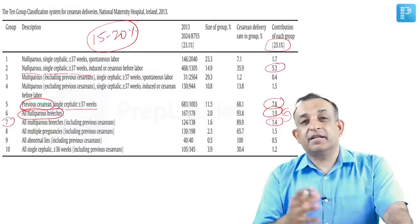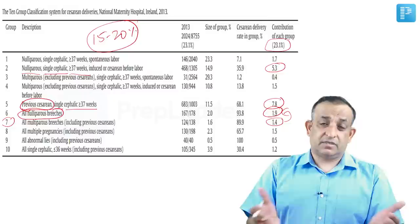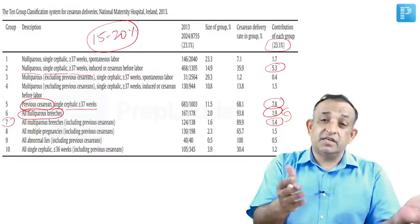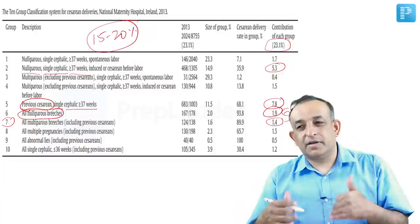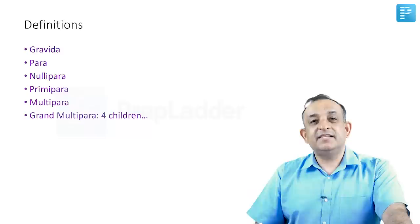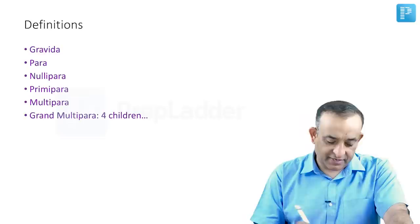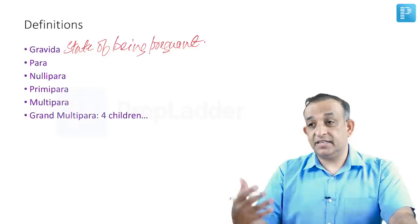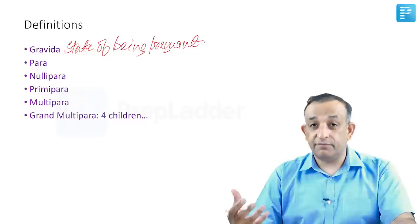More than 30% caesarean rate is totally unacceptable, and above 90% invites government scrutiny. Now, some important definitions: Gravida refers to the state of being pregnant right now. Gravida 1, 2, 3, or 4 indicates how many times she is currently or has been pregnant. Grand multipara applies beyond four pregnancies — Gravida 5 and beyond.